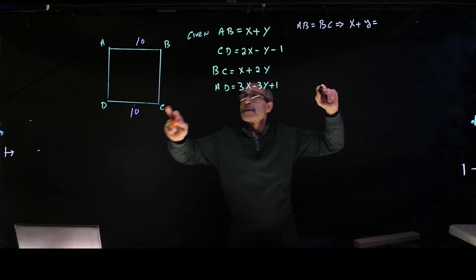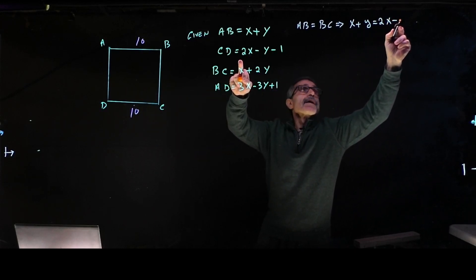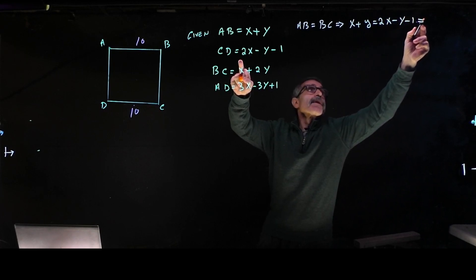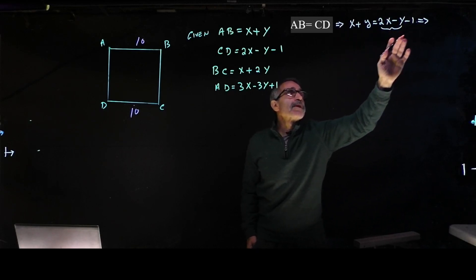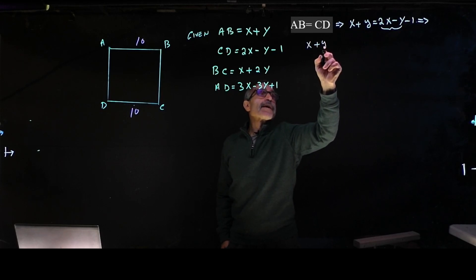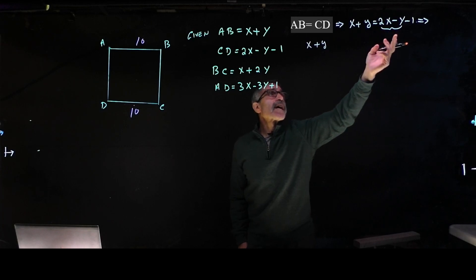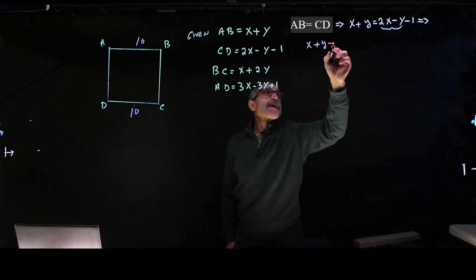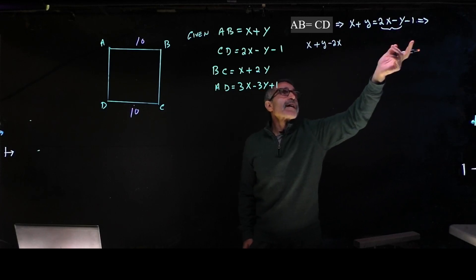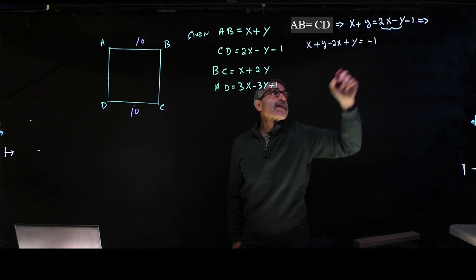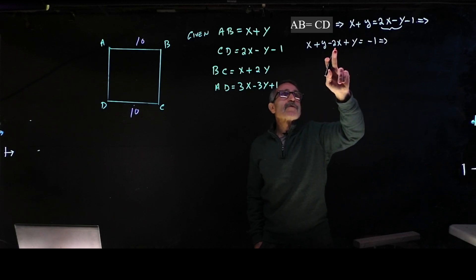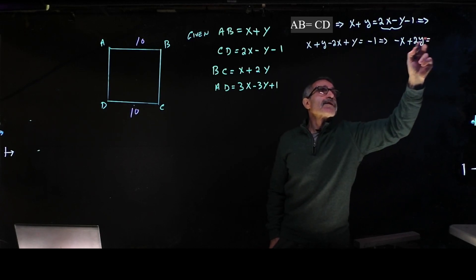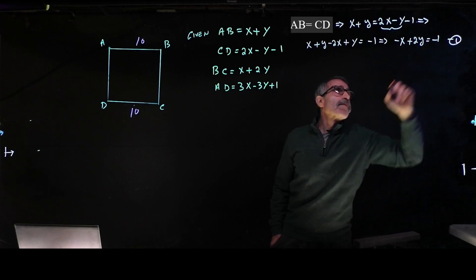AB equals DC: so x plus y equals 2x minus y minus 1. Bringing 2x and negative y to the left side: x minus 2x plus y plus y equals negative 1, giving us negative x plus 2y equals negative 1. That's equation 1.